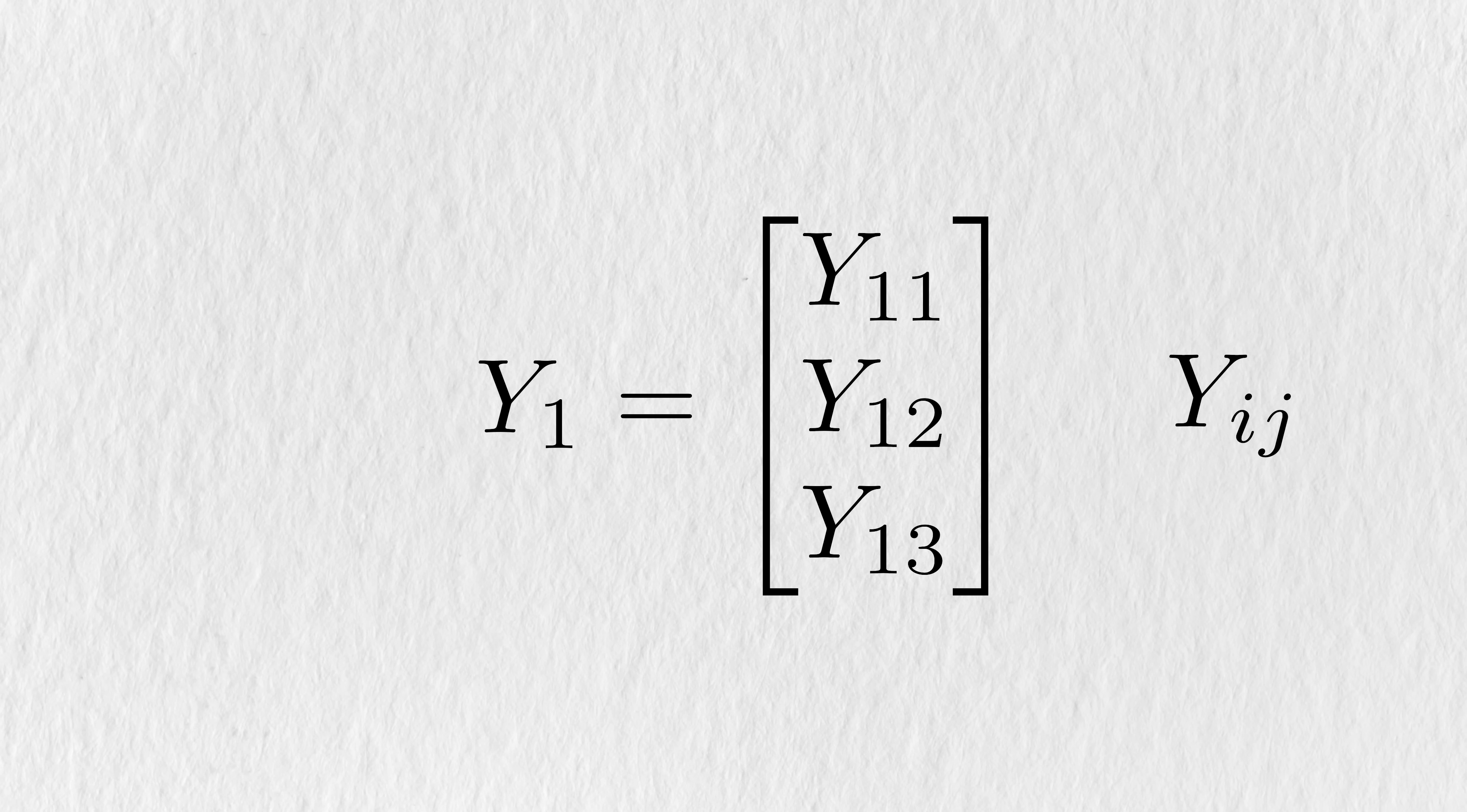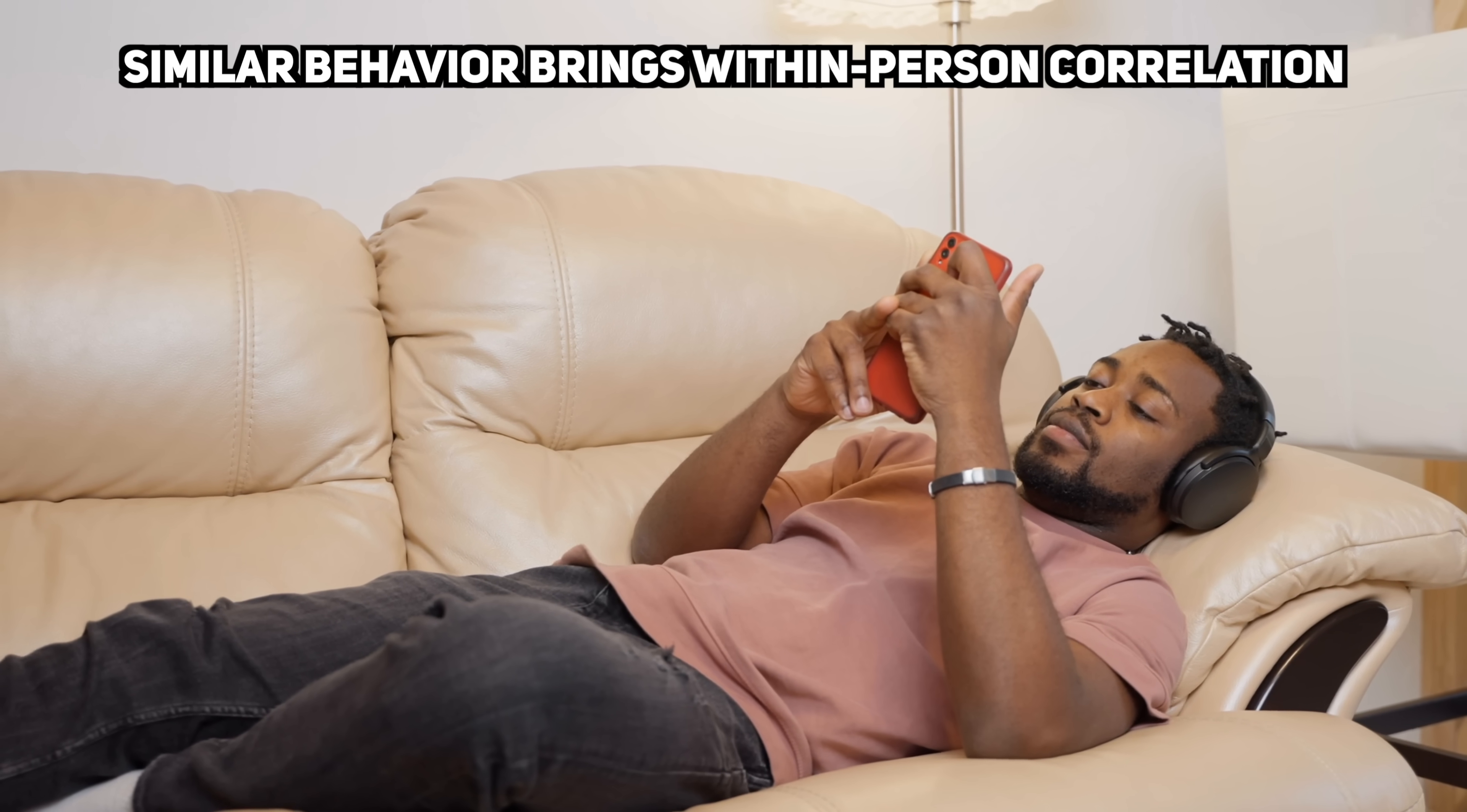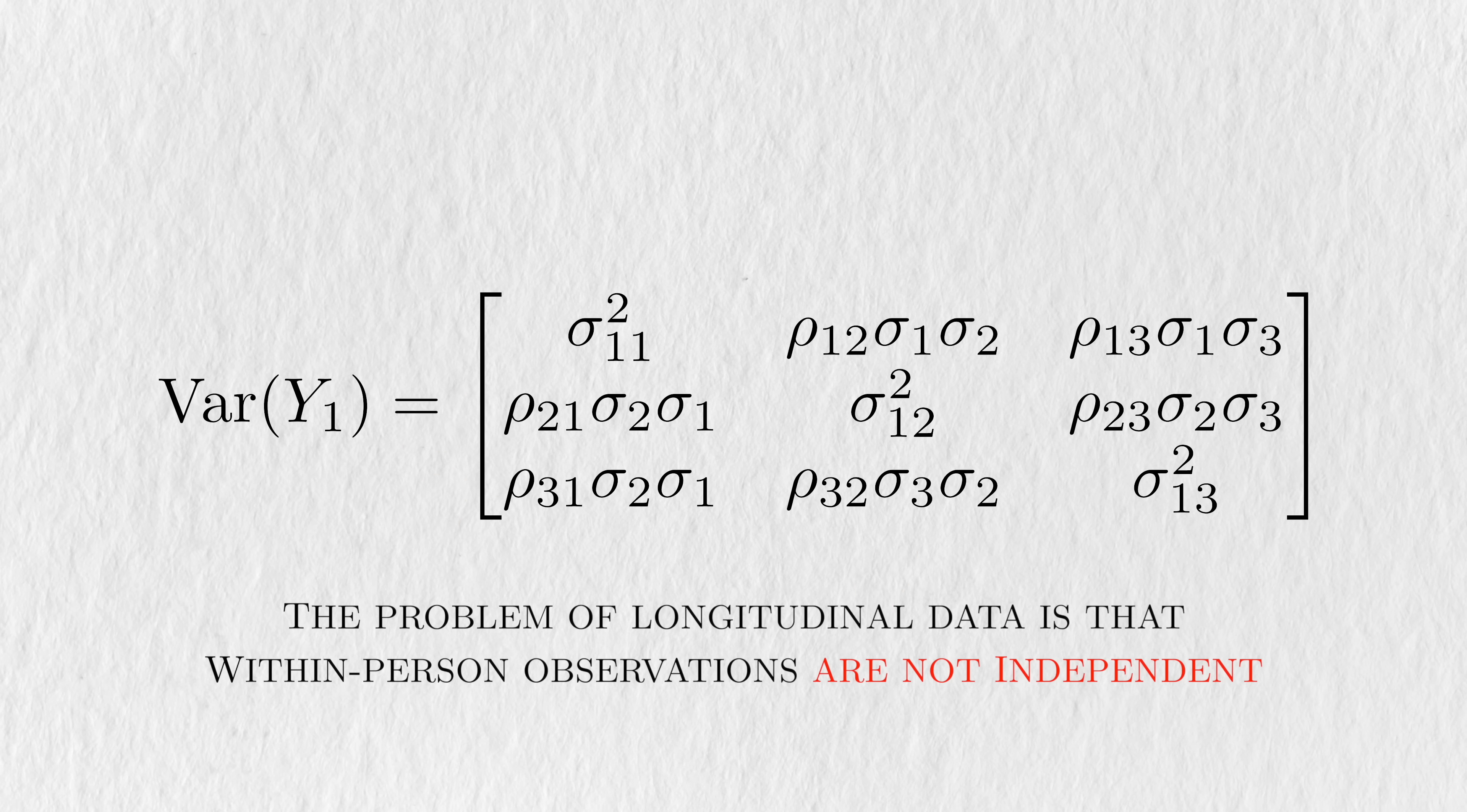Now we need two indices, I and J, because both people and their observations need to be indexed separately. I indexes the person, while J indexes the measurement. So Y12 would denote the second observation in the first person. We'd also use Y1 to refer to the vector for the data for the first person. Assuming nothing dramatic happens, their screen time should look relatively similar over time. That is, we expect there to be some degree of within-person correlation between these three measurements. If we were to look at the covariance matrix for this person's data, we'd expect these off-diagonal covariance elements to be non-zero. So, the problem of longitudinal data is that it violates the independent element of the IID assumption.